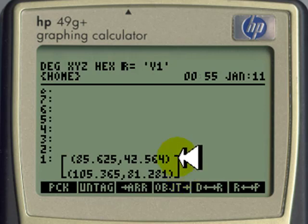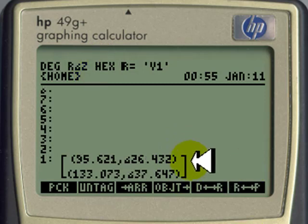V1 and V2. Of course they are represented in rectangular form because that is the current mode of the calculator. Let me set it up in polar form. And we see that those two values V1 and V2 are represented in polar as well.